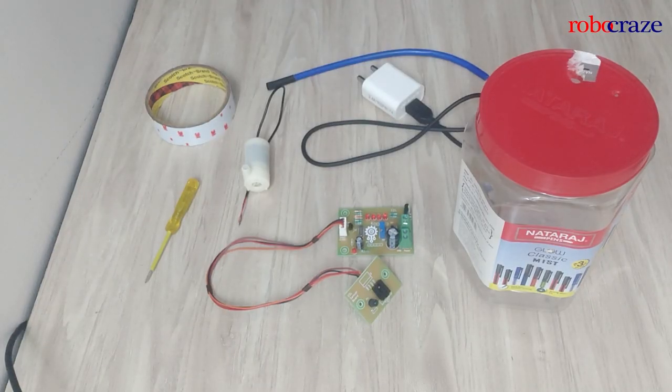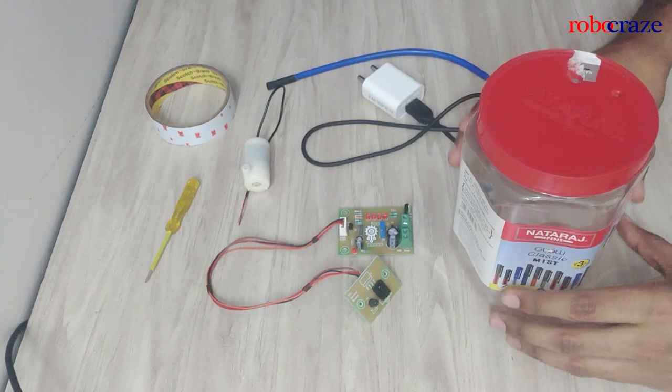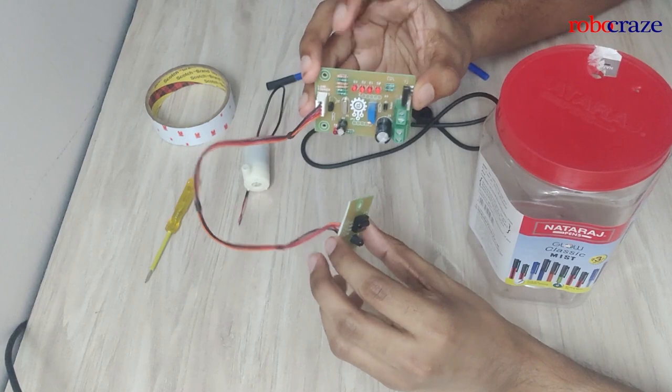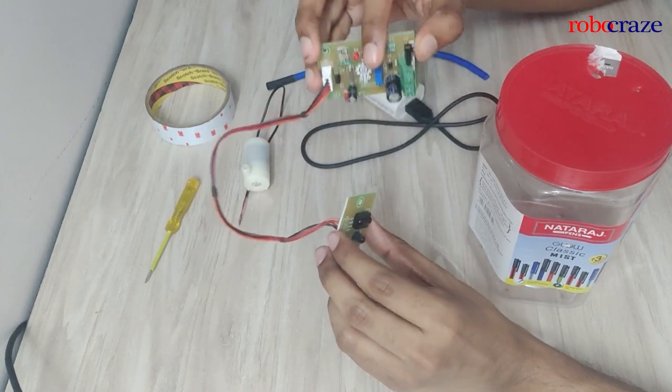To make your own DIY automatic hand sanitizer, the materials you require is as follows. An empty jar, a DIY automatic hand sanitizer module, the link to buy this module is given in the description,